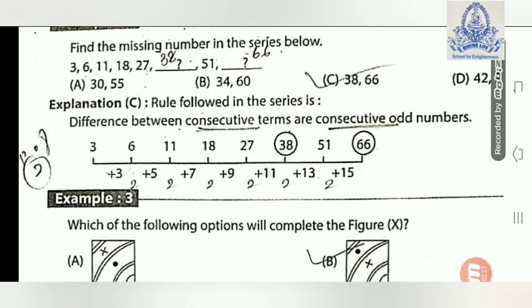Twenty-seven plus eleven gives thirty-eight. Then to find the next term after fifty-one, the next odd difference is thirteen, so thirty-eight plus thirteen equals... wait — fifty-one is given, and thirty-eight plus thirteen equals sixty-six? Actually, the answer is thirty-eight and sixty-six. So option C is right: 38 and 66.